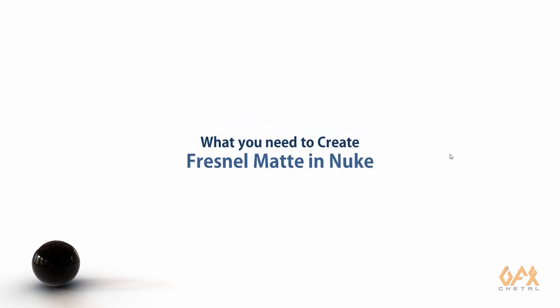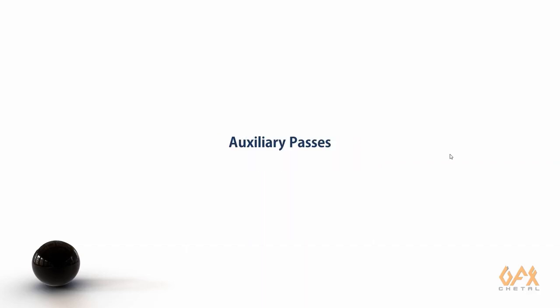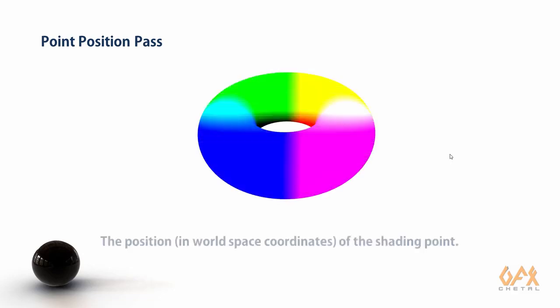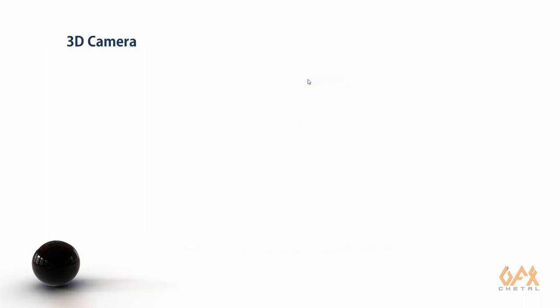To create a Fresnel matte or Fresnel effect in Nuke, you need some auxiliary passes. First, you need a normal pass, which represents the normal at the shading point. You also need a point position pass — the position in world space coordinates of the shading point — where each pixel stores the XYZ information of that rendered area in 3D space. Finally, you need the 3D camera through which you rendered the scene.